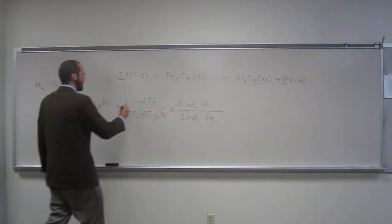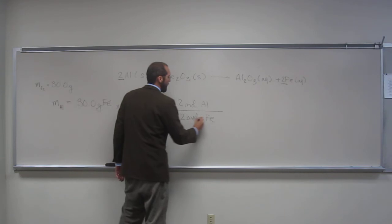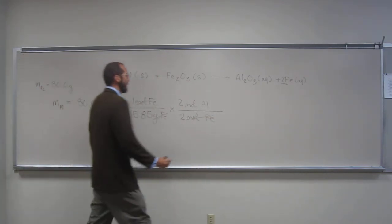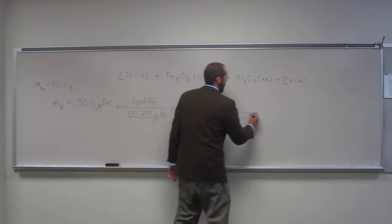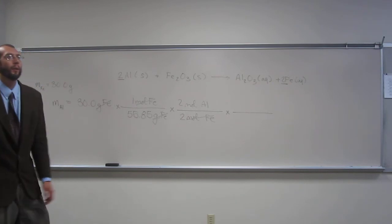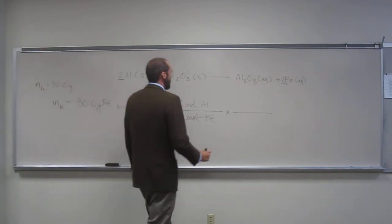So, have we figured out the number of grams of Al yet? No. What do we do? Mole mass again, right? What is it? How do we find it? Look at the periodic table, right? Twenty-six ninety-eight.